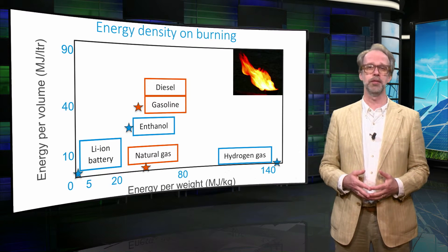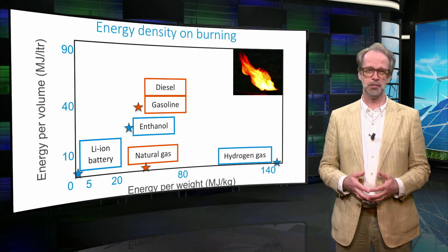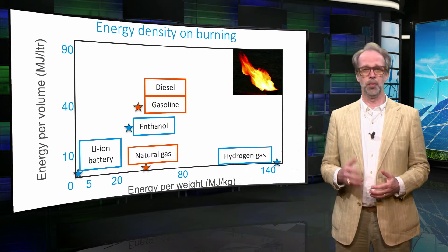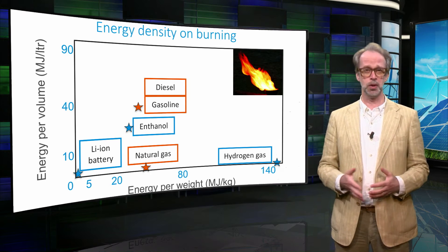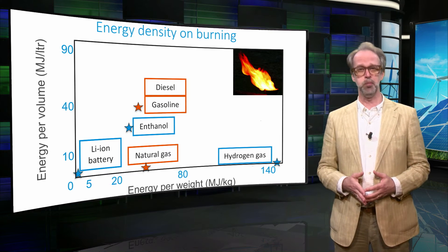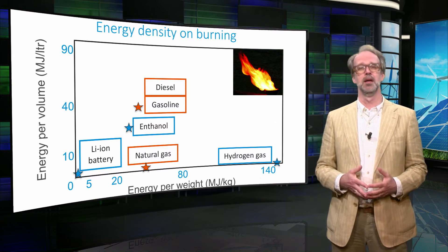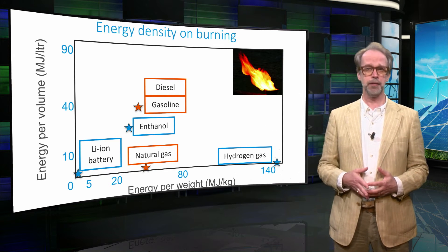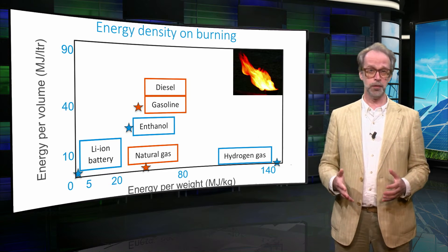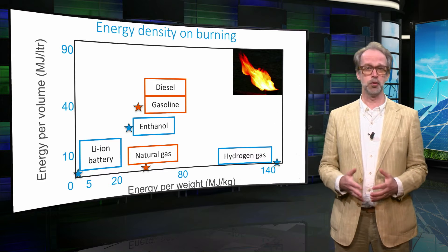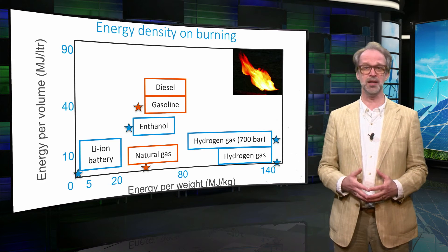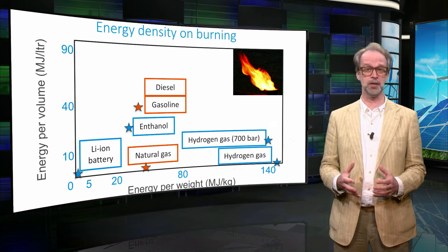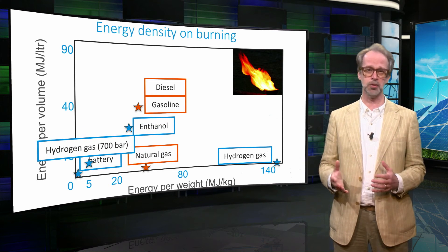Comparing the energy density of hydrogen with some well-known fossil fuels, we find some interesting differences. On the horizontal axis of this plot we find the amount of energy stored per unit weight. On the vertical axis we plotted the energy per unit volume. While hydrogen gas has a very high energy density per unit weight, the density is very low per unit volume and you have to compress it to get to reasonable values. However, in that case a heavy tank is needed, which reduces the gravimetric energy density to around 5 megajoules per kilogram.